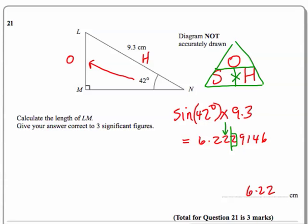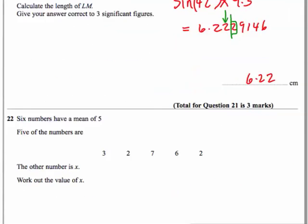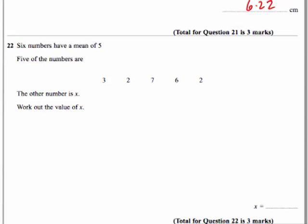That's the trigonometry question done. Now this one, I quite like these. We've been given five numbers here, but it says there are actually 6 numbers that have a mean of 5. There's 5 of them listed here and then the other one is x.